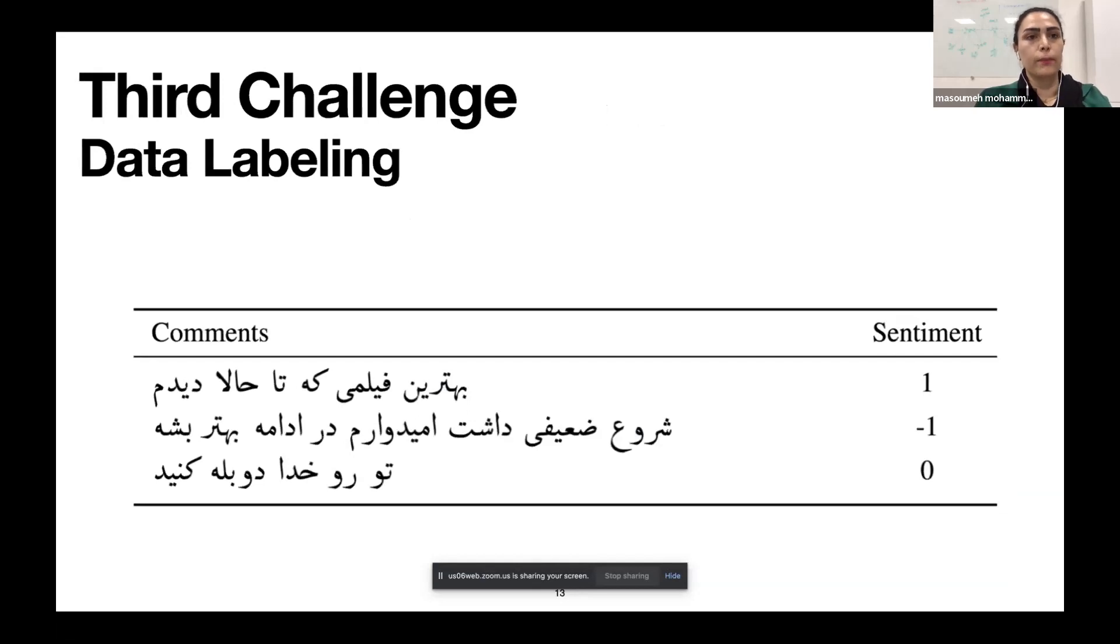Third challenge was data labeling. The collected data has been categorized in three categories by ten annotators manually. Some sentences like 'this is the best movie I've ever seen' carry positive emotions, so we assign one to the target. Some other sentences such as 'the starting was weak' carry negative meaning, so we assign minus one. The third category belongs to neutral sentences. We can make an example such as 'please translate the movie' or 'I have no idea about the movie, I don't like documentary,' etc.